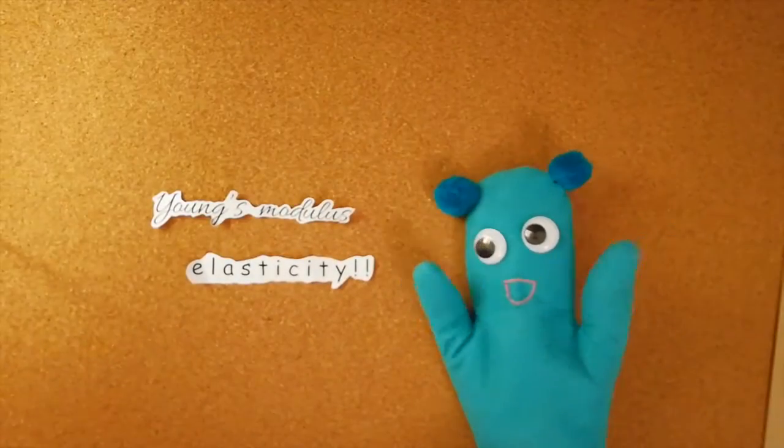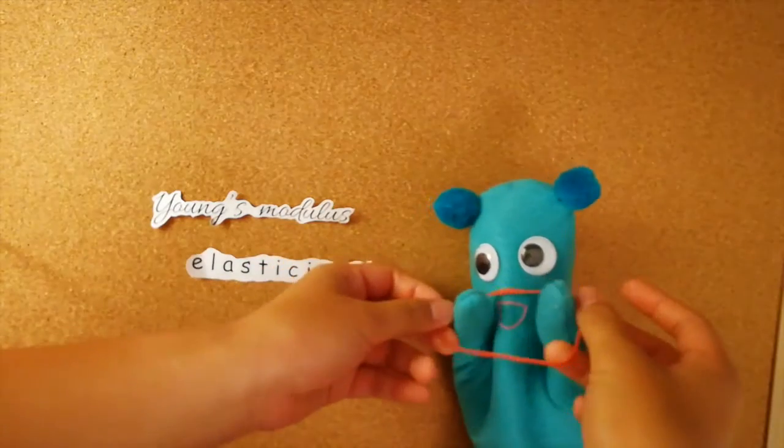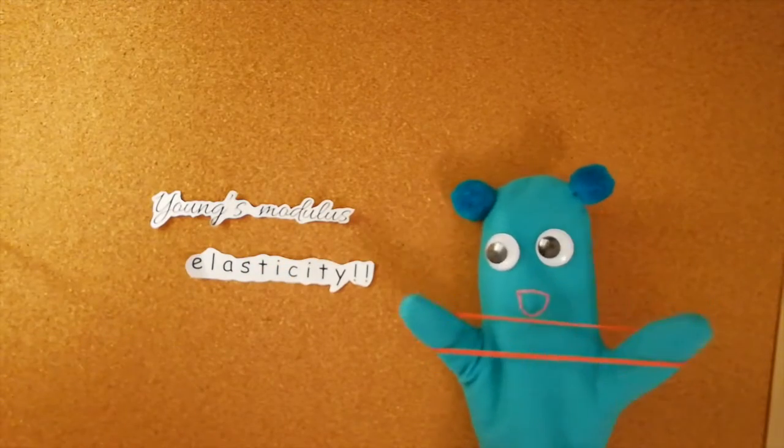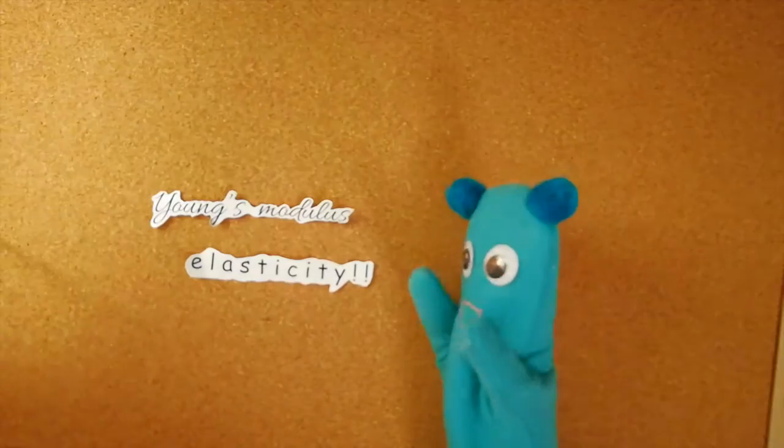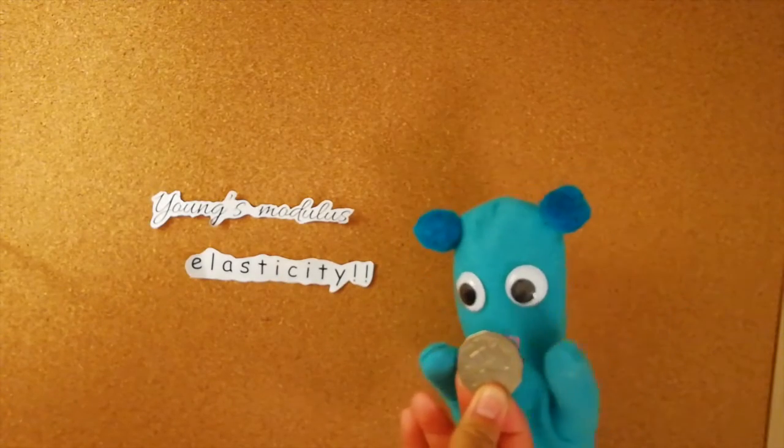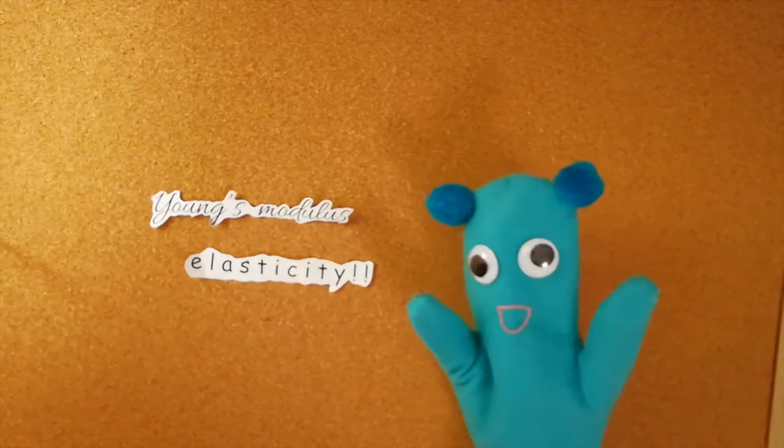So for example, the Young's modulus of a rubber band, which is super elastic, is only about 55 MPA. But the Young's modulus of titanium is 116 gigapascals.